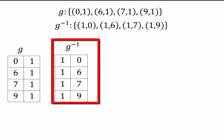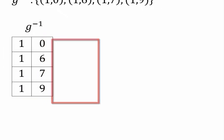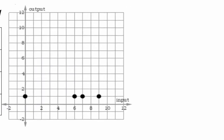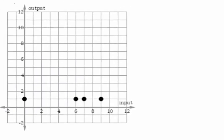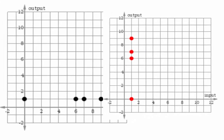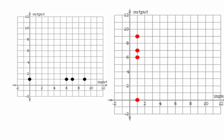We can also represent them in the Cartesian coordinates. So g would be the coordinates you see here. And then g inverse would be the coordinates that you see in the second graph with the red dots.